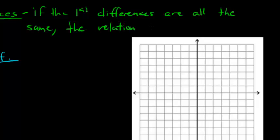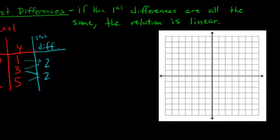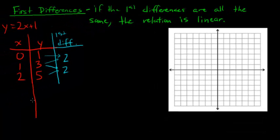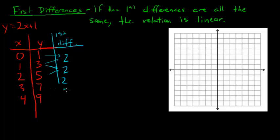You can probably guess that if the first differences are not all the same, it is not linear. We can prove this by creating an even bigger table of values. Adding x = 3 and x = 4: 2 times 3 plus 1 is 7, and 2 times 4 plus 1 is 9. The difference between 5 and 7 is 2, and between 7 and 9 is 2. I think you can see a pattern here.